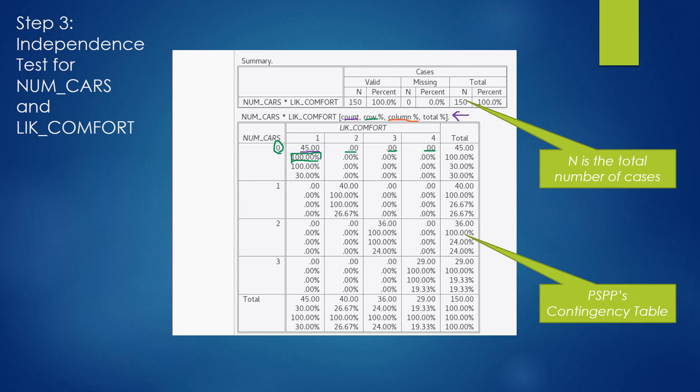The next number is the column percentage. It's the same interpretation but for a column. If you notice, all 45 people here represent the entire column. Therefore, they represent 100% of the column. And last but not least, and it's an important number to know, is these 45 people represent 30% of the overall total. That's how you read each cell, and that's how you can read the contingency table.